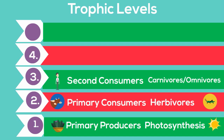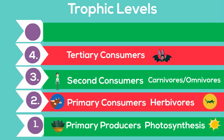Level 4 includes what is called the tertiary consumers — they eat other carnivores. And finally, Level 5 are called your apex predators. They are the top of the food chain, carnivores without any predators. This would include lions, the great white shark, and other such predators.